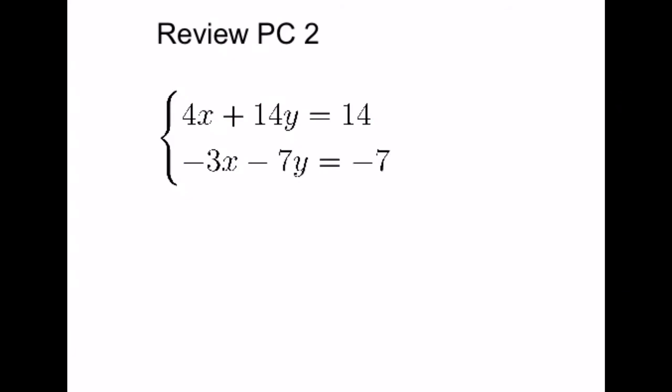Let's review a couple from last week's elimination. We look at the coefficients. We see 4 and 3, they're not going to cancel out, and 14 and 7 are also not going to cancel out. But 7 times 2 is 14. And we're going to use that trick to take this entire second equation and double the entire thing. So negative 3x becomes negative 6x. Negative 7y becomes negative 14y. And negative 7 becomes a negative 14.